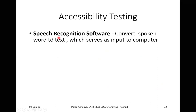For accessibility testing, we are going to use some software. For example, speech recognition software — it converts spoken words to text, which serves as input to the system. There is a plugin available for Google Chrome: when you need to write an email, instead of typing the full mail, you simply talk and that plugin writes whatever text it recognizes from your speech. So speech recognition software is treated as an input to your system.